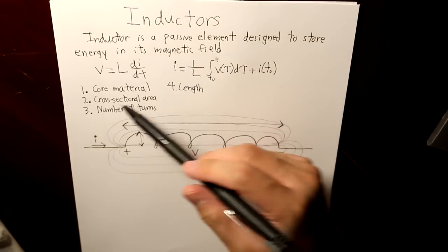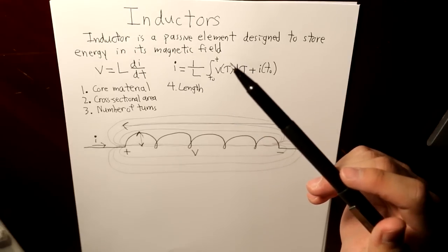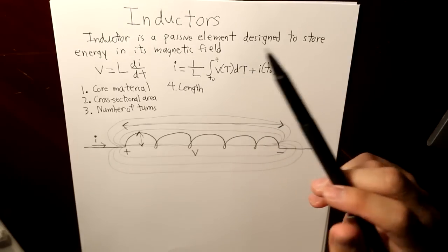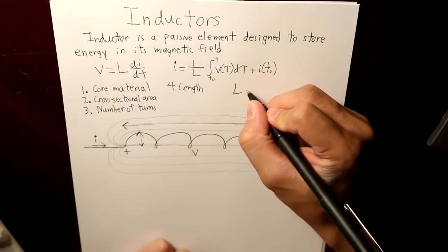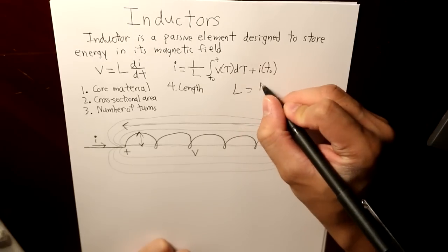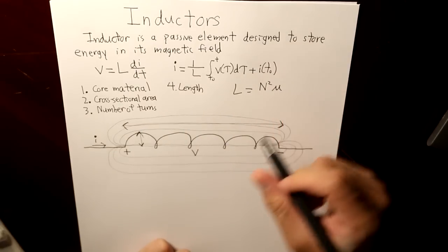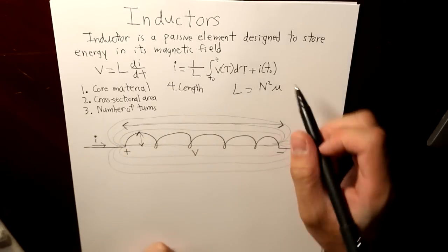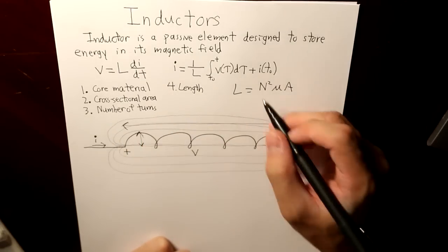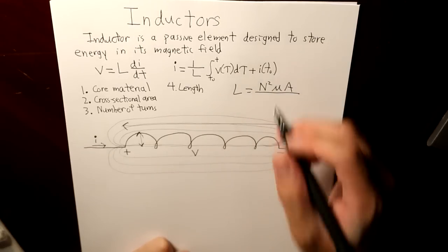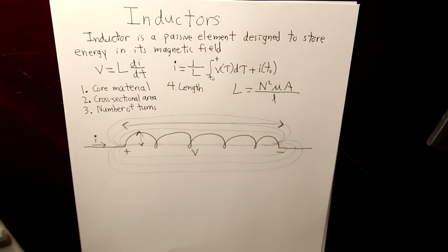And we can combine all these four characteristics to determine the ability for the inductor to store energy in its magnetic field. And that equation is simply defined as n squared, the number of turns, times the permeability of the core, times the cross-sectional area A, divided by the length.